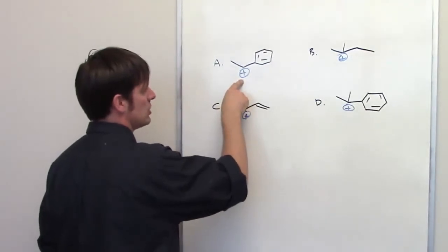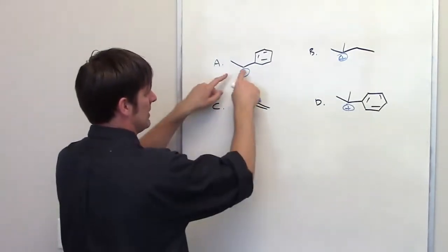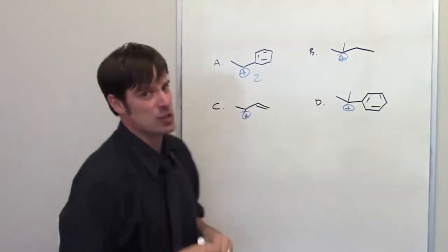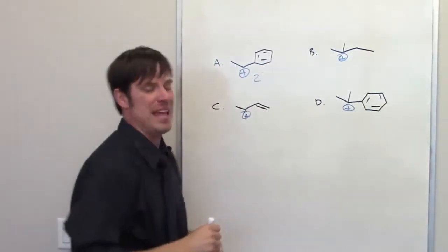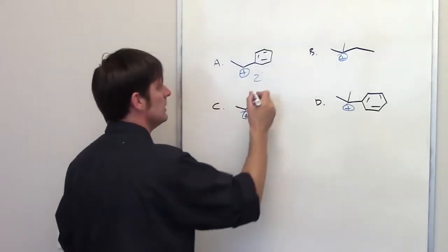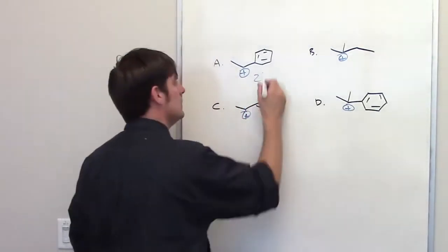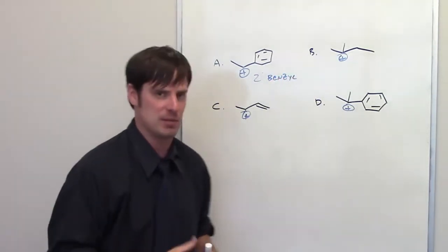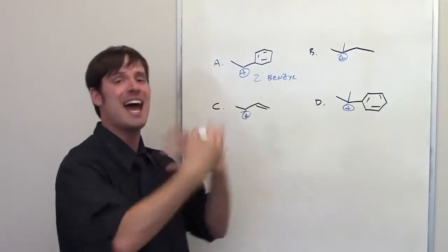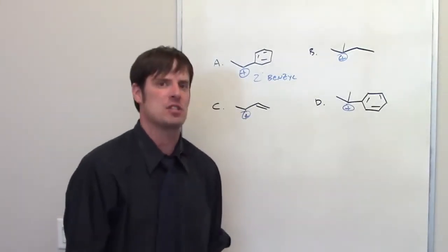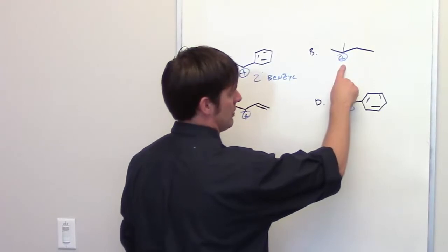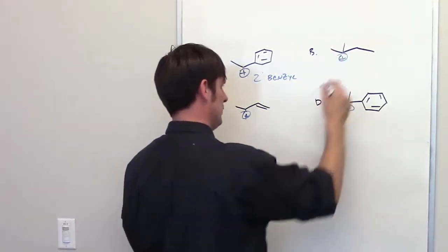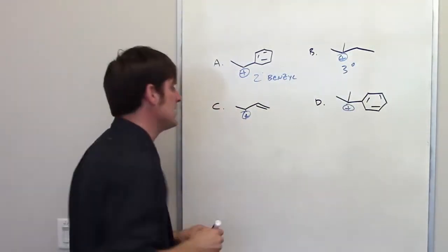This positive charge is on a carbon that's secondary. It's got a carbon to the left and a carbon to the right. However that isn't a regular secondary carbocation, that is a secondary benzyl carbocation. That is really, really stable as far as carbocations go. Over here I've got a tertiary carbocation. It's bonded to a carbon up top, carbon to the left, carbon to the right. That is a tertiary, not a tertiary benzyl.